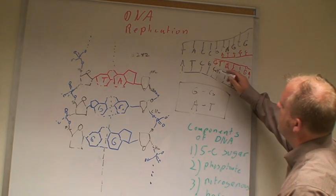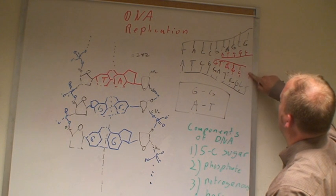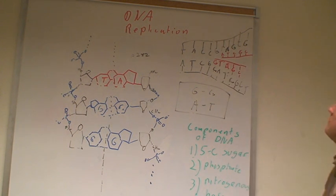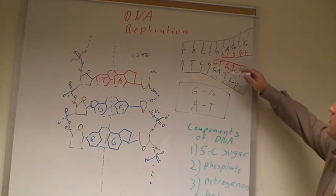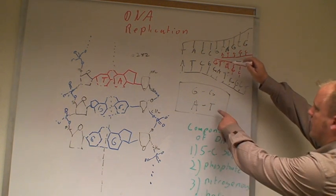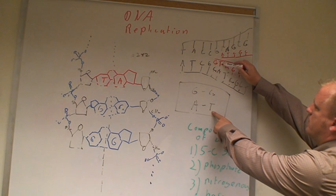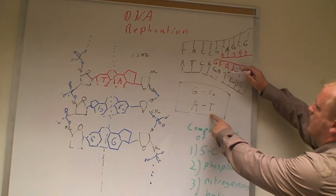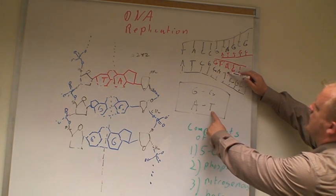So it comes, for example, it comes across the C and places a G right here. Then as it moves down, it sees an A and puts its corresponding base on the opposite strand, which is T. It sees a T and again puts an A.